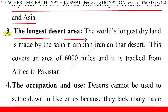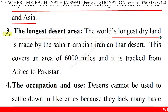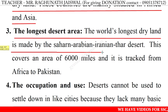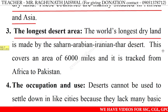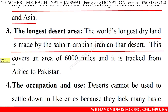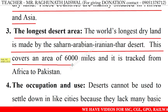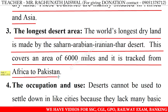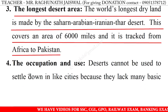3. The longest desert area: The world's longest dry land is formed by the Saharan-Arabian-Iranian-Thar Desert. This covers an area of 6,000 miles and it stretches from Africa to Pakistan.